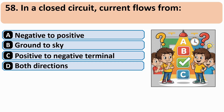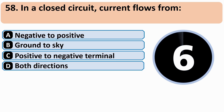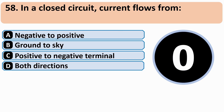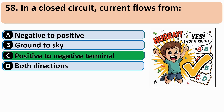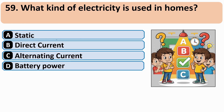In a closed circuit, current flows from: the correct answer is C: Positive to negative terminal.